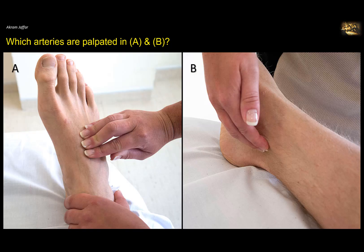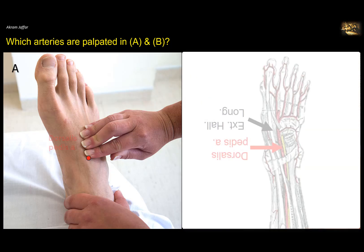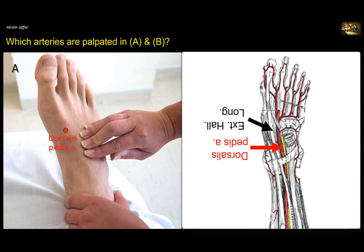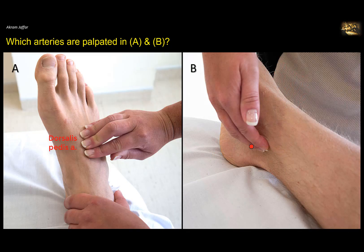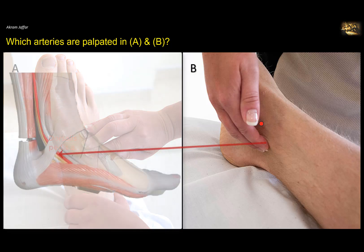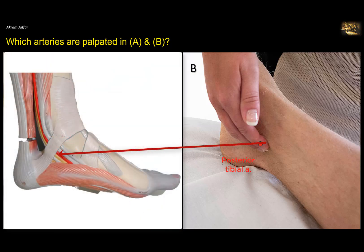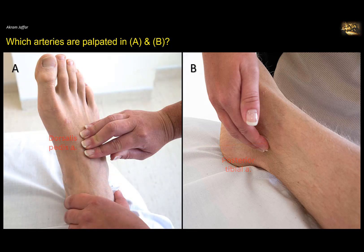Which arteries are palpated in A and B? In A, the artery palpated is on the dorsum of the foot, just lateral to the tendon of extensor hallucis longus — this is the dorsalis pedis artery, distal to the malleoli. In B, this is the medial side of the ankle, and behind the medial malleolus is the posterior tibial artery.